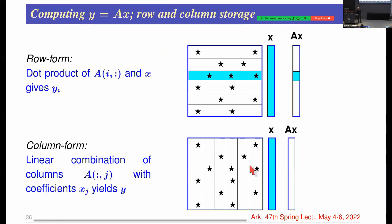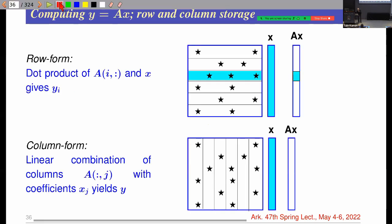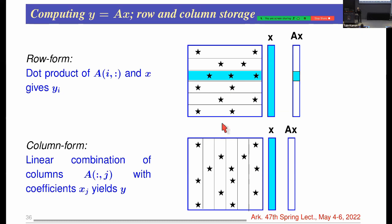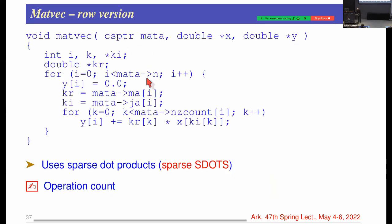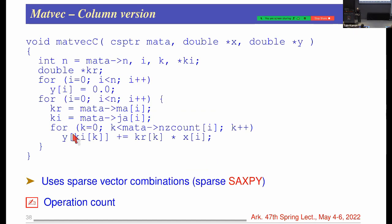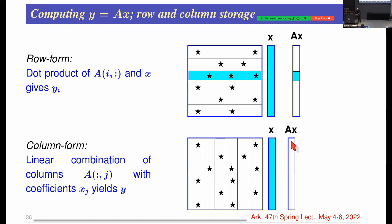For the column-oriented version (CSC), instead of computing inner products you form linear combinations of columns: x₁ times column 1 plus x₂ times column 2, and so on. In this case the indirect addressing falls on the output vector y, since you're scattering contributions to different locations in y.